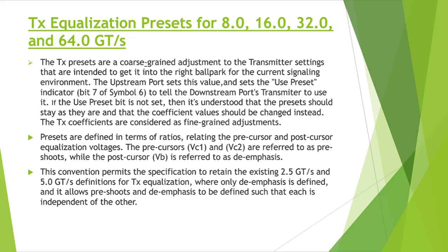In Gen3 onwards, you are doing equalization by using preset and cursor coefficients. Preset means the voltage you have to maintain at the receiving side and transmitting side — the voltage maintained between both sides. In equalization, you are using a handshake mechanism. You are sending some presets to the link partners. Link partners will determine whether the preset gives proper signal quality. If the signal quality is not good, then it will use the internal preset, which is built into the device, to make the signal quality good.